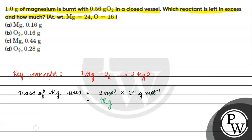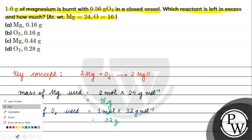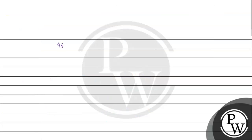If we talk about the mass of oxygen, the mass of oxygen used will be 1 mole into 32 grams per mole, which gives us 32 grams of oxygen.